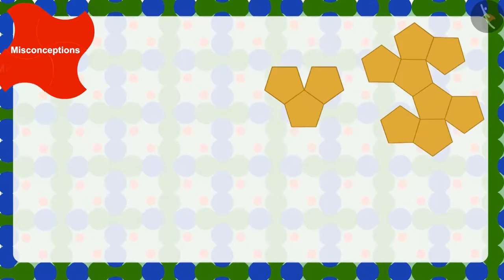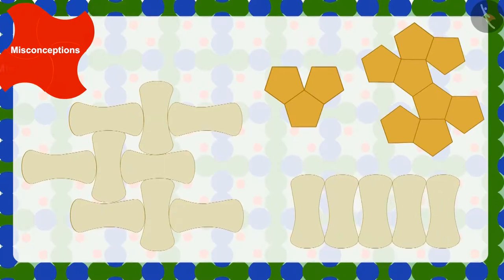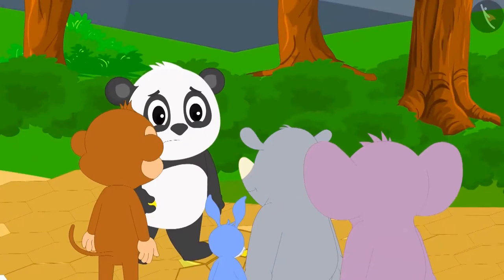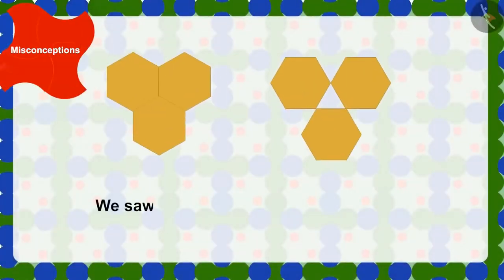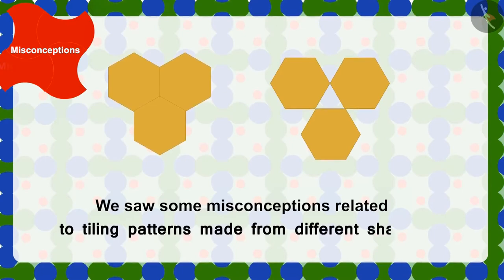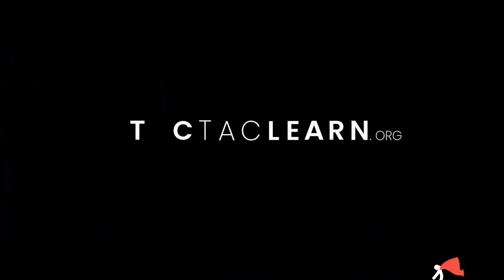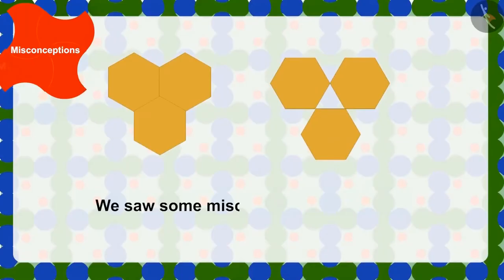Children, there are many shapes like this one which cannot be used to make designs with no space between them. Golu kept trying the whole night but could not make a pattern. In the morning a big crowd had gathered around Golu and he had to share the treasure with all those people. Children, we saw some misconceptions related to the tiling pattern made from different shapes.